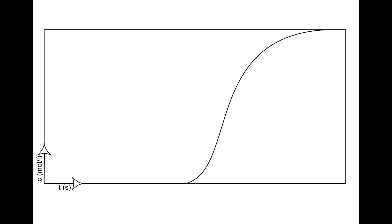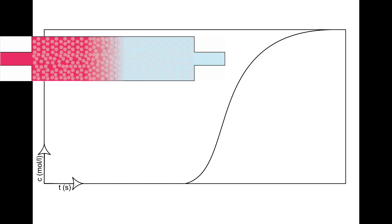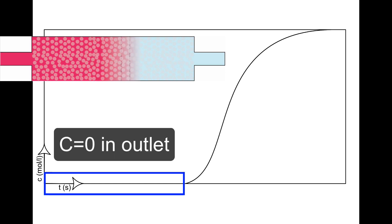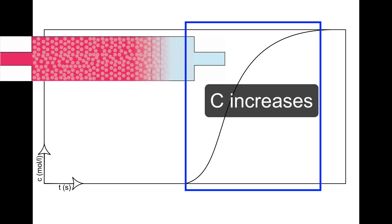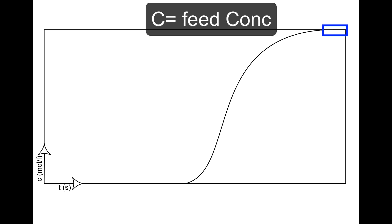Let us freshen up what the breakthrough curve is and how that is related to the capacity of the adsorption column. A fresh or regenerated column is fed with a feed with a certain concentration of a substance that can be absorbed in the column. Initially, the concentration in the outlet is zero, but after some time the concentration in the outlet starts to increase. If we wait long enough, the concentration in the outlet increases until it equals the concentration in the feed.